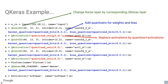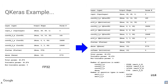Looking at the model summary after quantization: the first convolution, assuming 8-bit input images, requires a signed multiplication between a 4-bit weight and an 8-bit input. For the subsequent convolutions, we can perform just 4×4 bit operations. This illustrates how the quantization types selected directly inform the multiplier complexity for each layer.